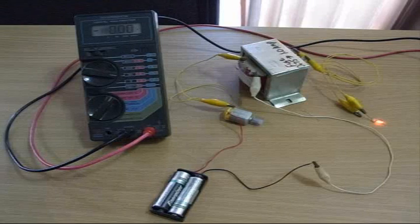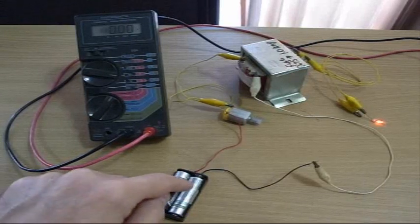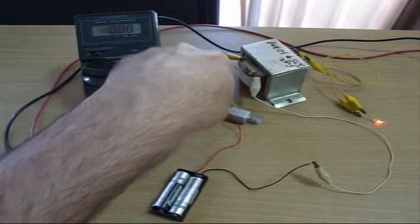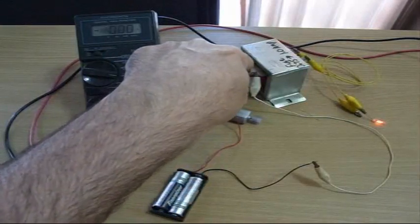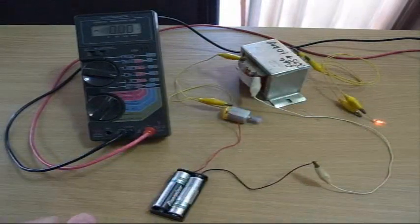This is something I saw on the internet, a free energy device. As you can see it's a battery, a little motor. The battery circuit passes through a transformer on one side and it comes around here and goes back to the batteries.